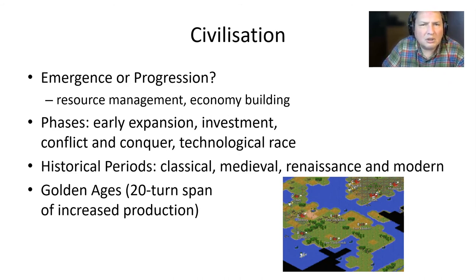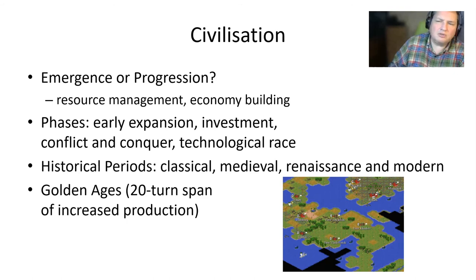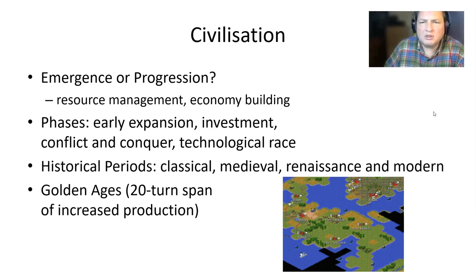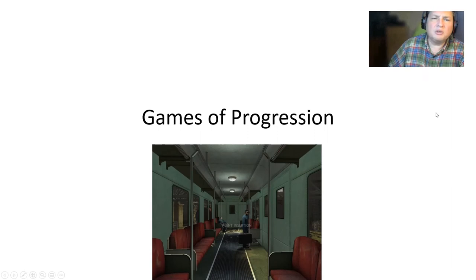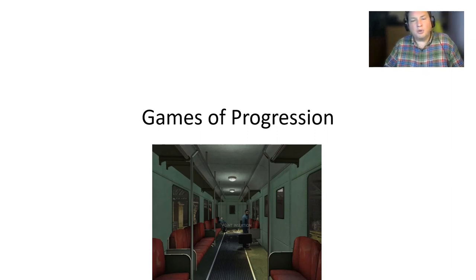This game also has golden ages — 20-turn spans of increased production. They are scripted, so in those terms they are another aspect of game of progression. On the other hand, the trigger that starts the golden age is also based on game rules, so golden ages can be identified as something on the borderline between the game of emergence and the game of progression. If we have identified elements of game of progression in Civilization, maybe it's time to move on to our next topic: games of progression.